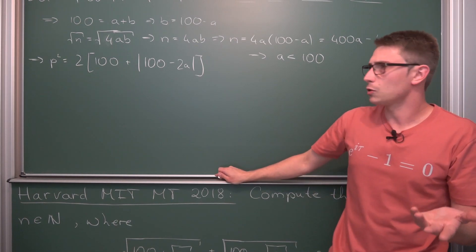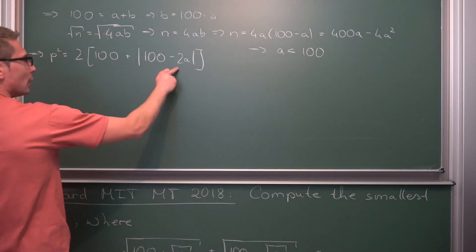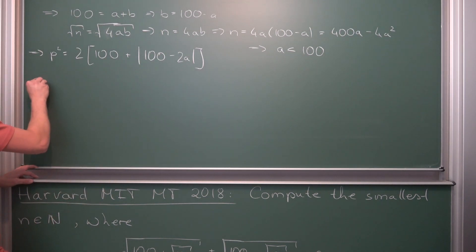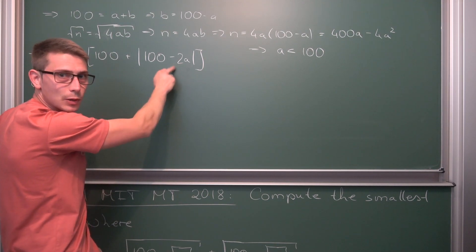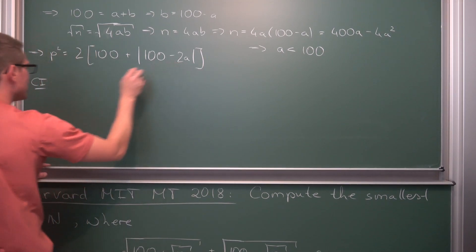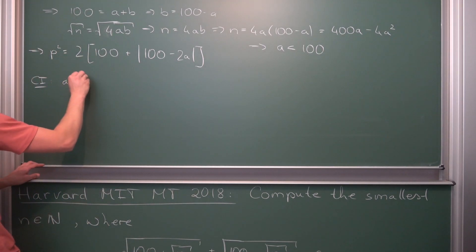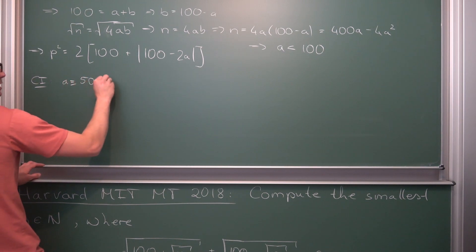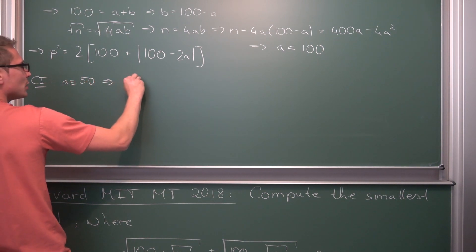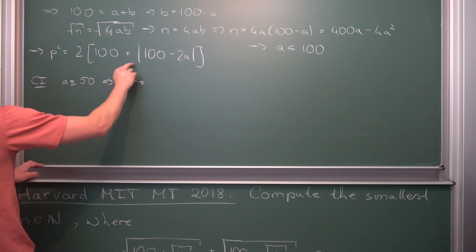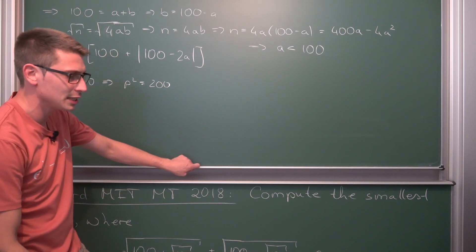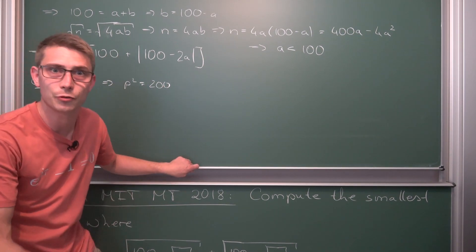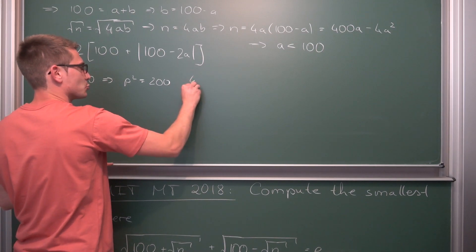Case 1: the argument goes to zero. If a = 50 exactly, we get 100 − 100 = 0, so p² = 2 × 100 = 200. But 200 is not a perfect square, so this case doesn't work.